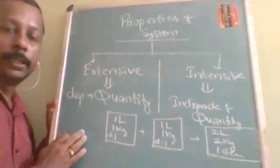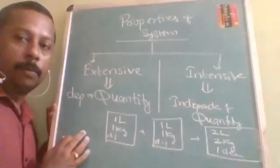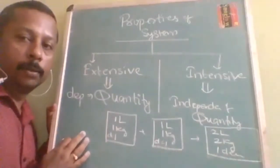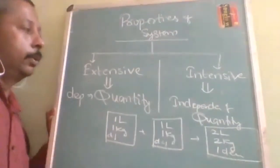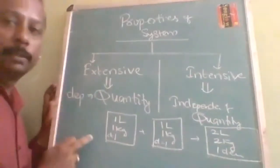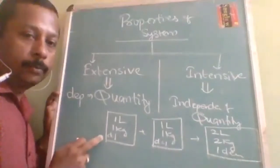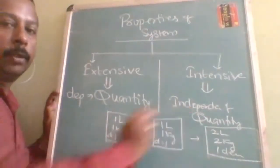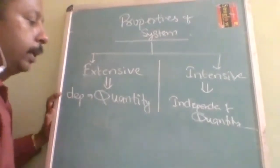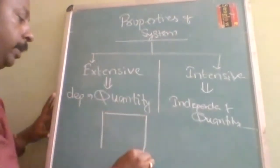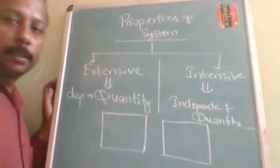So the examples I'm going to dictate — everyone should carry a notebook and pen to make a good note. Mass is an example of extensive property; volume is an example of extensive property. But their ratio — mass divided by volume — is an intensive property.